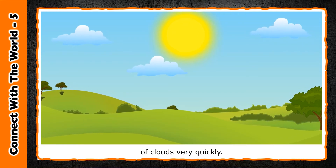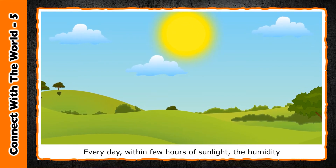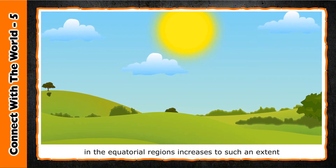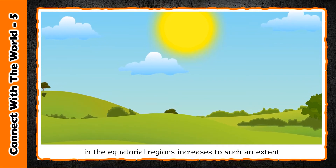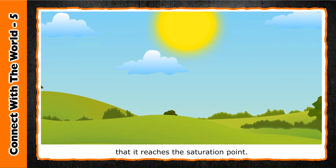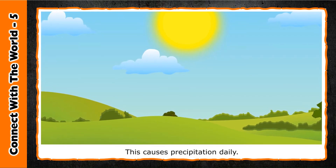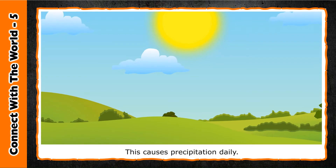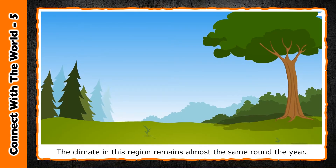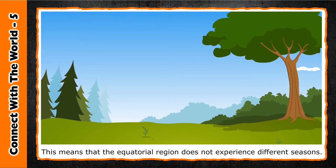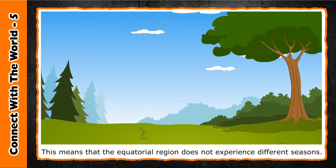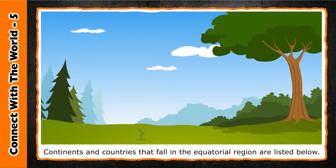The high evaporation increases humidity considerably, helping in the formation of clouds very quickly. Every day, within a few hours of sunlight, the humidity in the equatorial regions increases to such an extent that it reaches the saturation point. This causes precipitation daily. The climate in this region remains almost the same round the year, meaning the equatorial region does not experience different seasons.